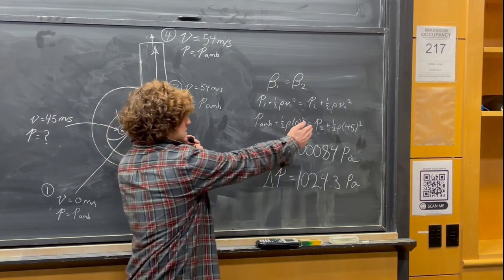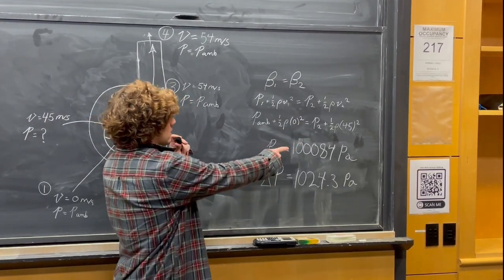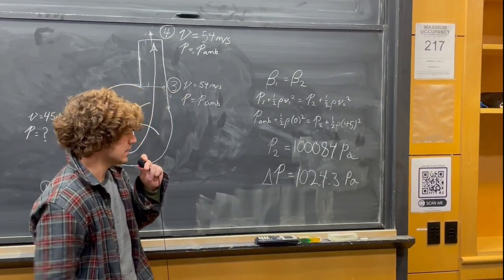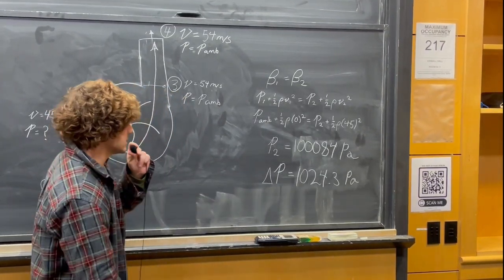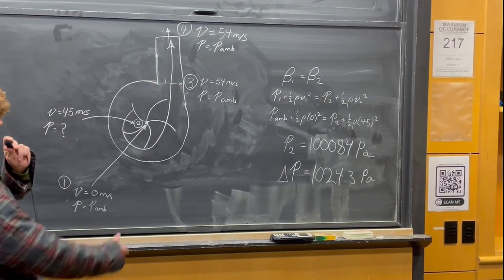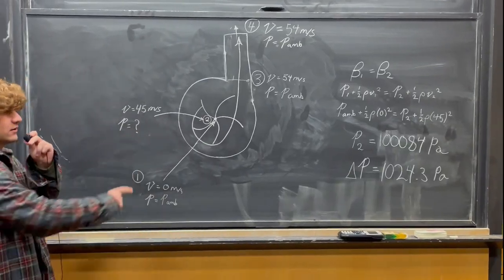Solving for P2, we get 100,084 Pascals. And 1024.3 Pascals is our ΔP from two to three, which we got by subtracting P ambient from P2.